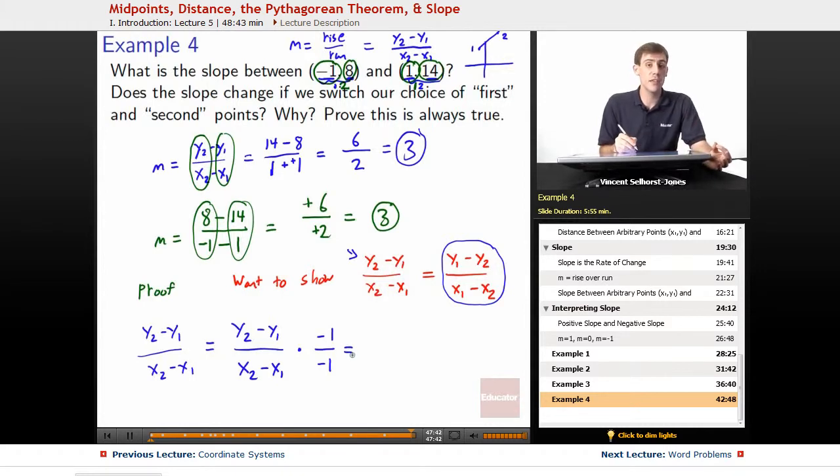We multiply it by negative 1 on the top and negative 1 on the bottom. Notice, since we're multiplying the top, we're not just multiplying the first part of the top, we're multiplying the whole top. Because it's multiplication, it's going to apply to this fraction as if it started in parentheses. Times negative 1 over negative 1, y2 minus y1 times negative 1 becomes negative y2 plus y1 over negative x2 plus x1.